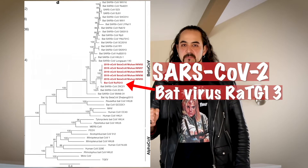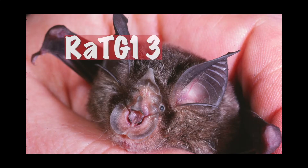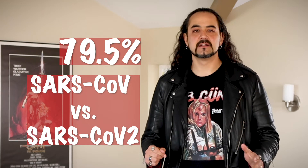We believe it came from a bat virus and it's very closely related to a bat virus called RATG13. It's about 96.2% identical by its genome. In comparison, the human SARS coronavirus from 2002 is about 79.5% identical genome-wide to SARS-CoV-2 today.